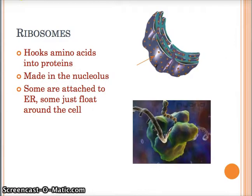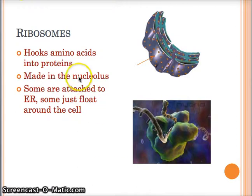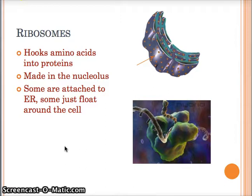Now I'm a big fan of the ribosome - they're small and they're mighty. They play a big job even though they don't look like anything at all. What they do is hook up amino acids - a chain of amino acids makes a protein. Ribosomes are made in the nucleolus - that's important to write down. You can have two versions: some that get attached to the ER, making it the rough ER, and others that just float. So there are attached ribosomes and free-floating ones. These are in plant and animals.